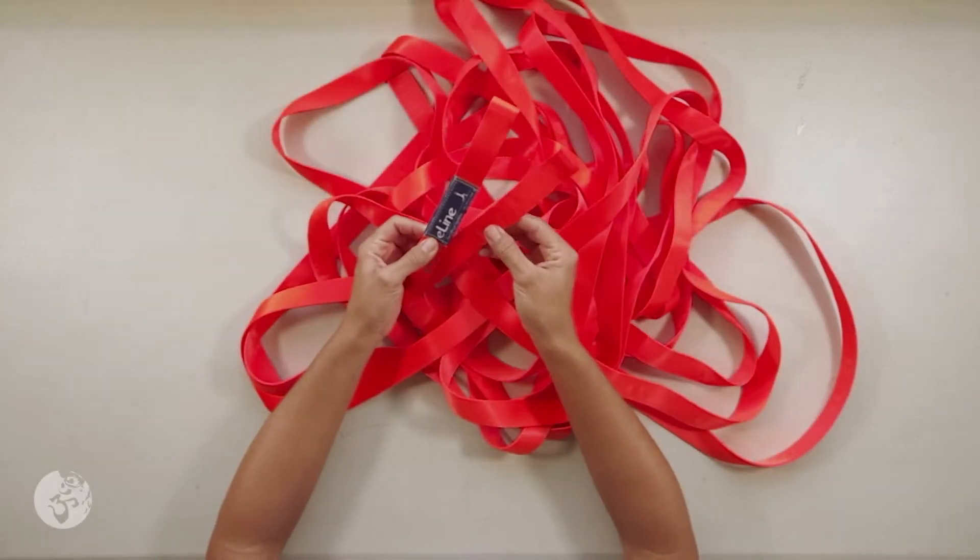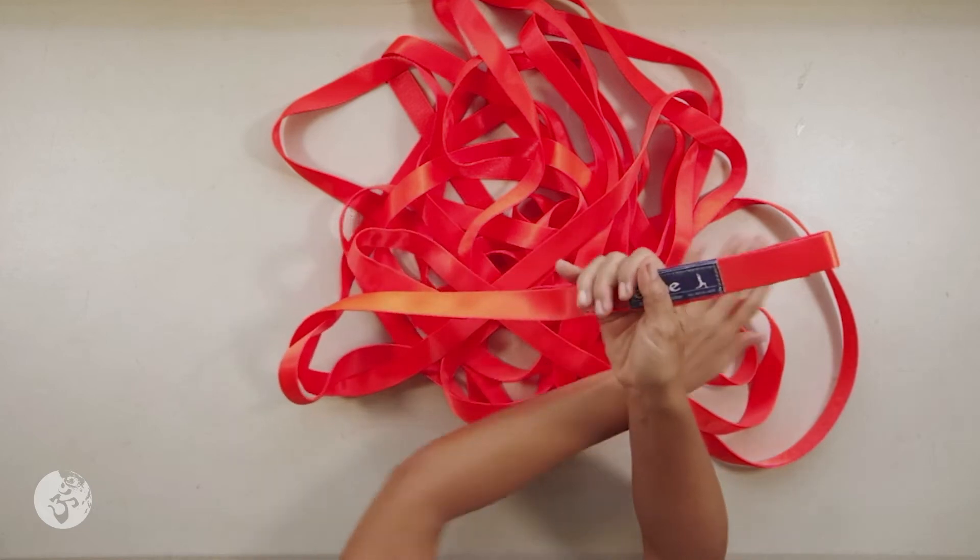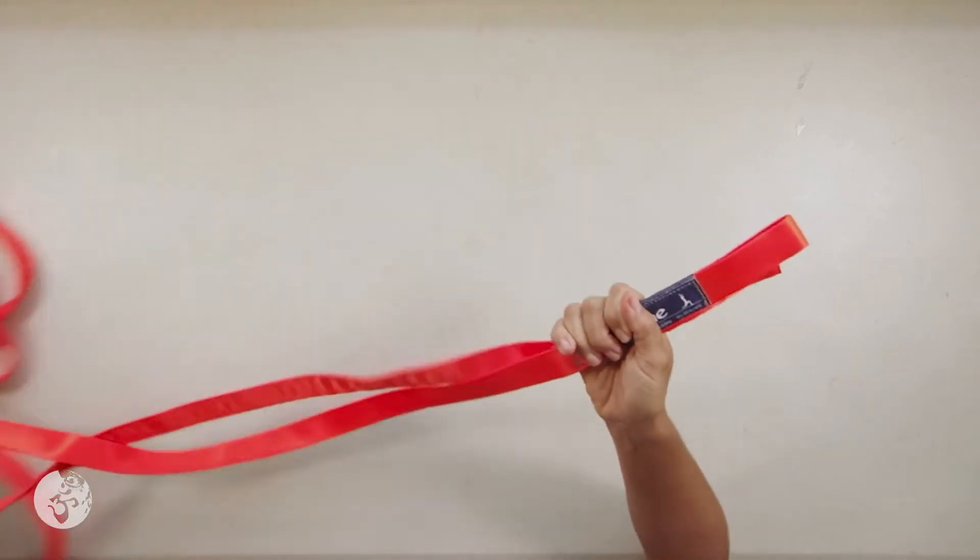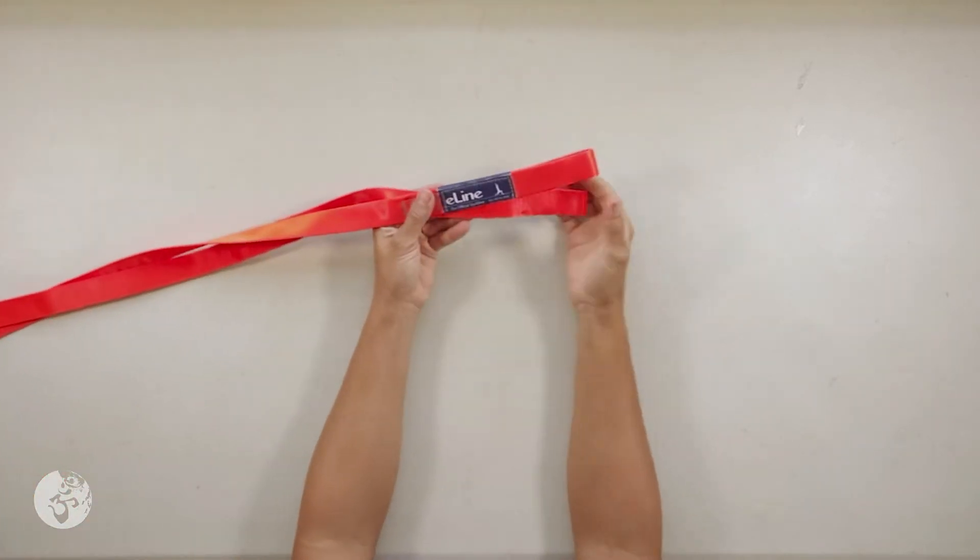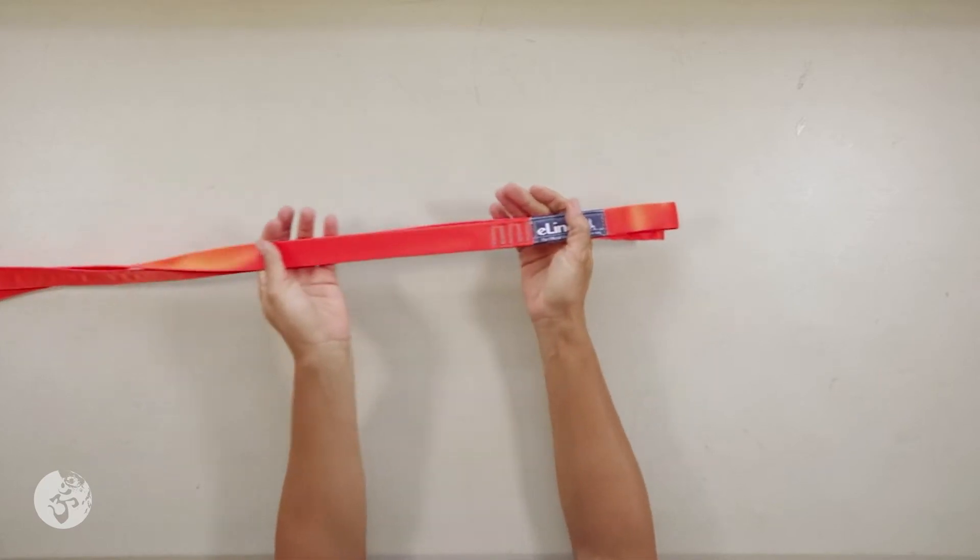To start, hold the loop side of the line and the end side of the line in one hand. So let's drop this to the ground so you can see. I have the loop and the end of the line on one side in one hand.